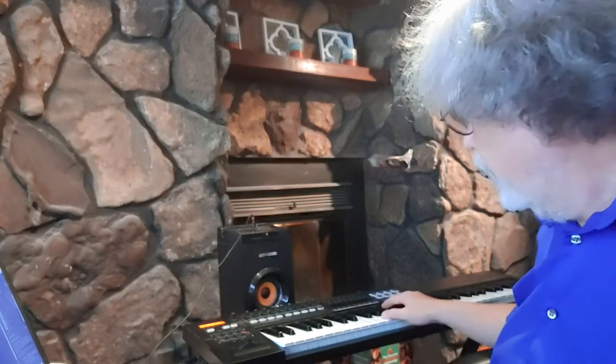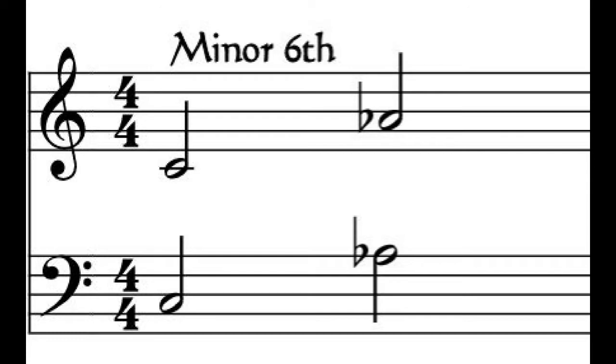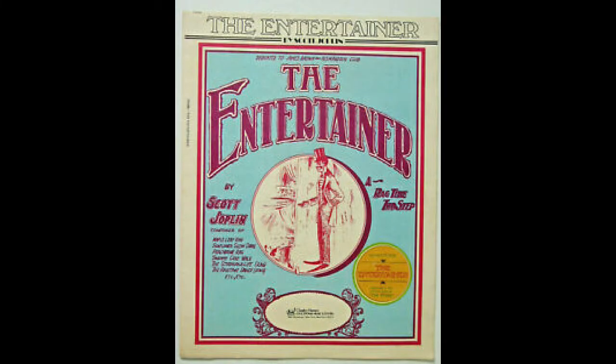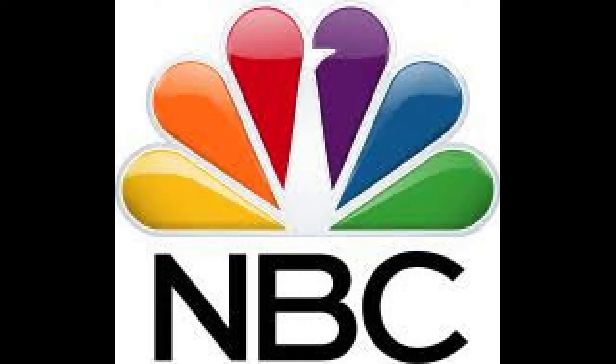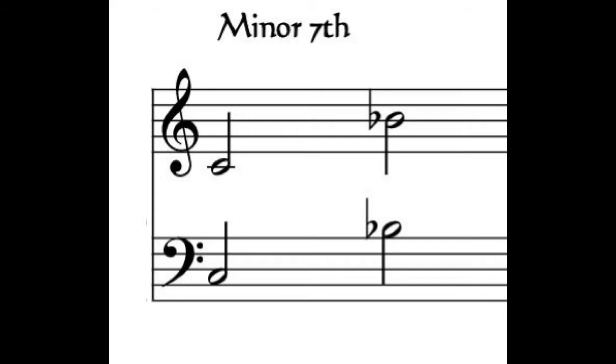Just to review: today we've gone over the minor six, and the best song for that was The Entertainer. We've done a major six — My Bonnie Lies Over the Ocean — but NBC might even be more common and easier to remember. Minor seventh: 'There's a place for us, somewhere' from West Side Story. And for a major seventh: Take On Me by A-ha, which is a great video — if you haven't seen it, you should go watch it.